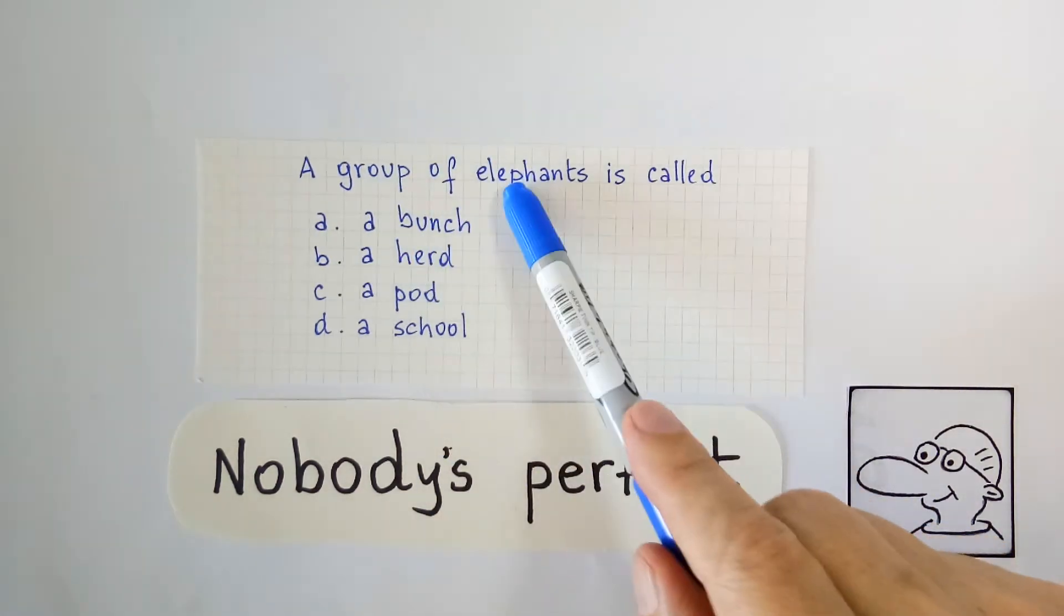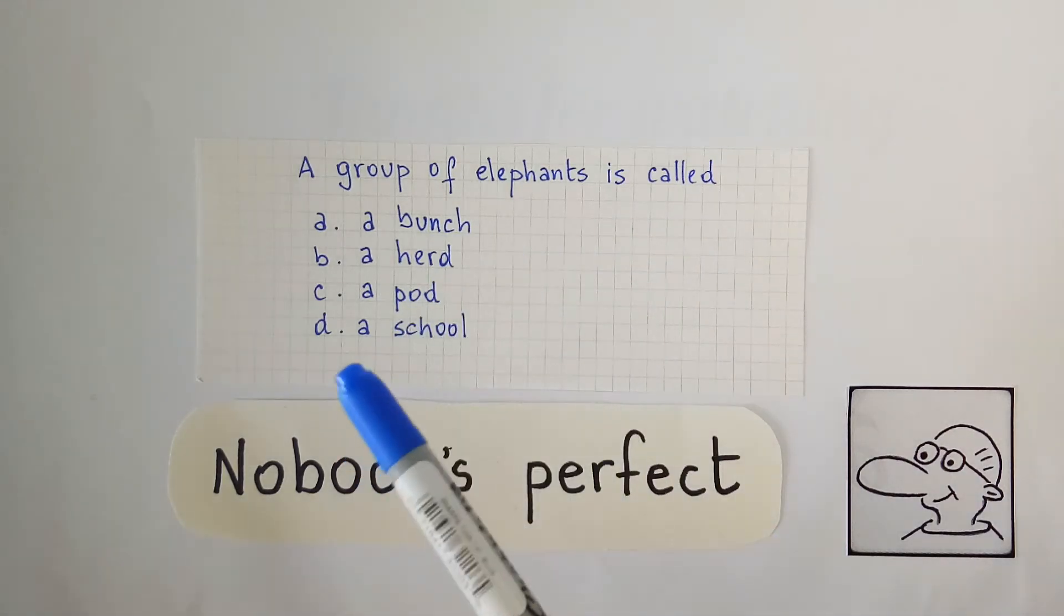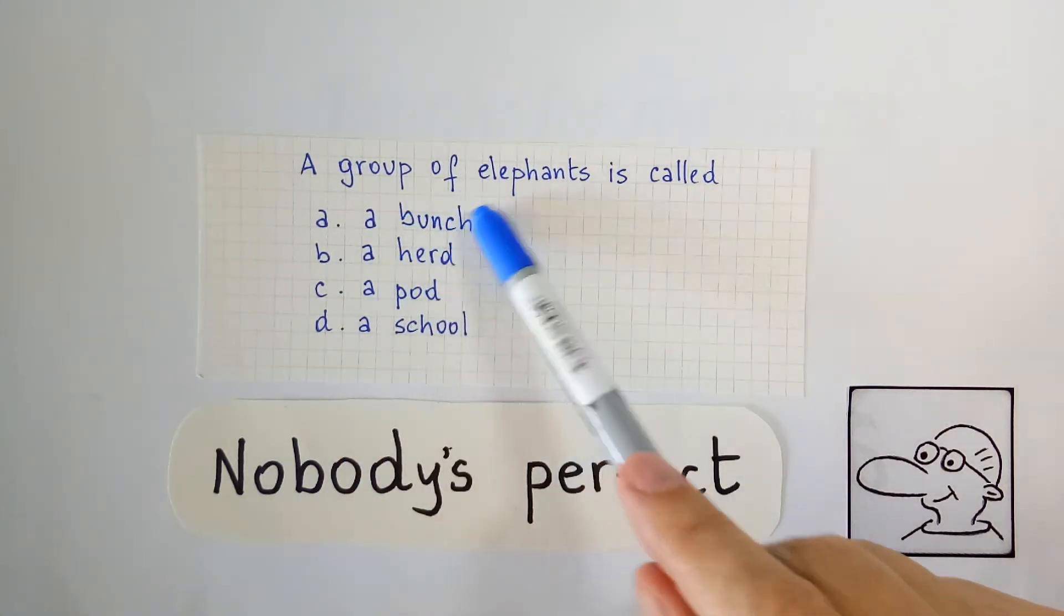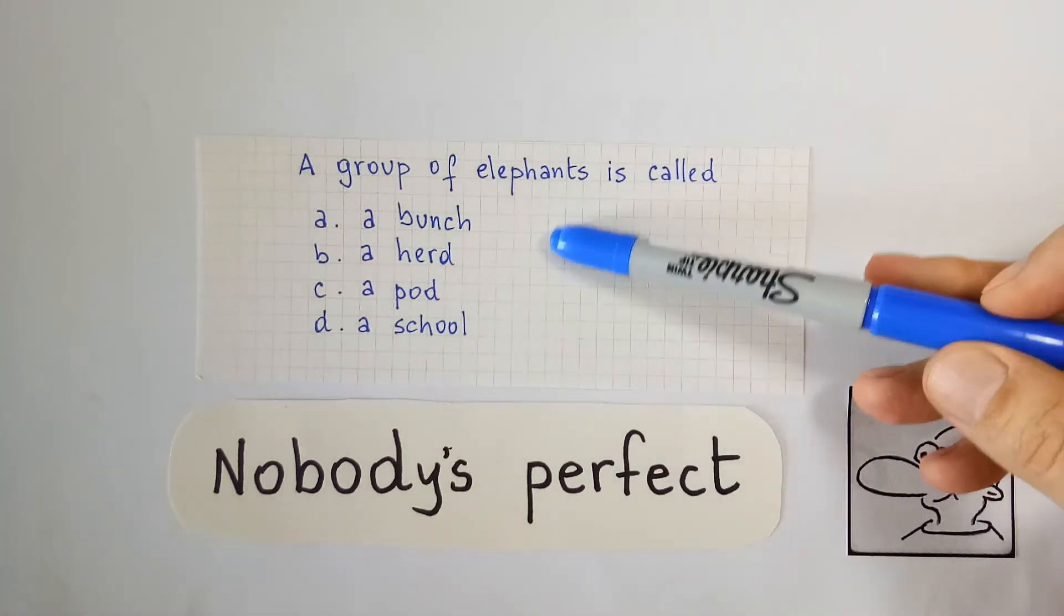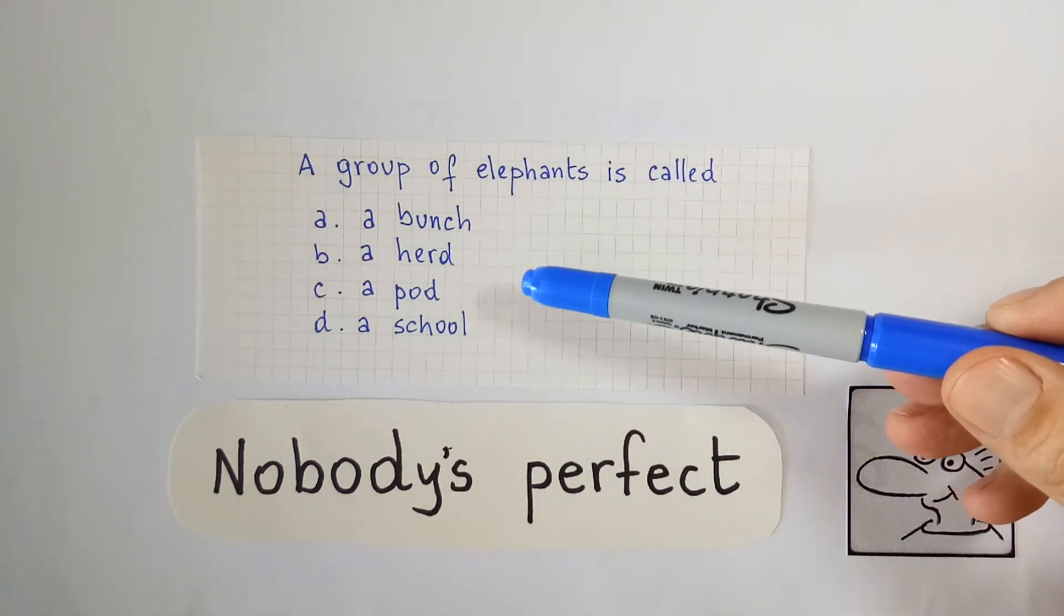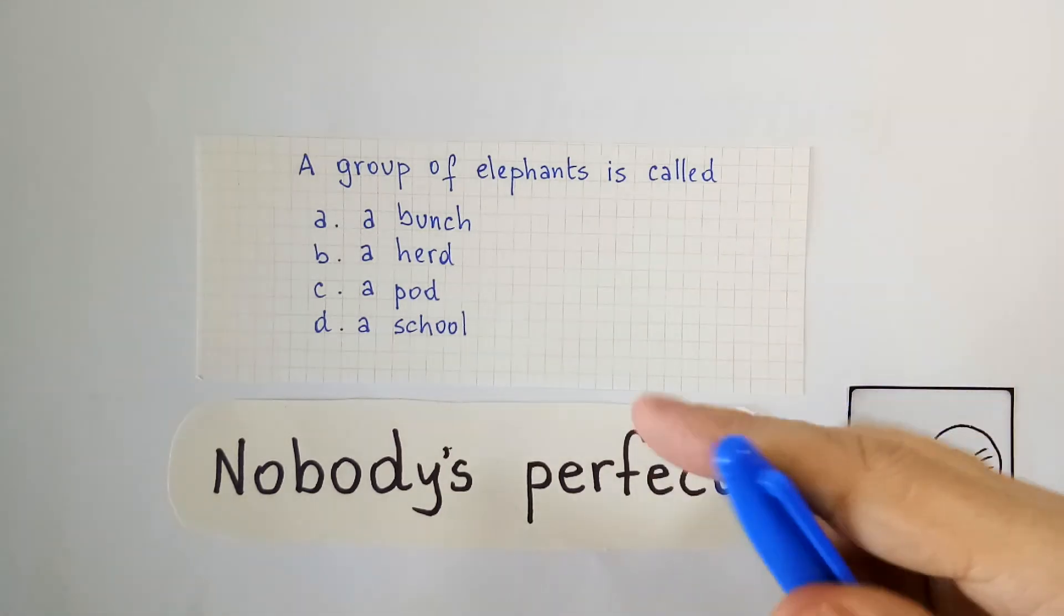As you may know, groups of animals usually have a specific name. Now do you know what we call a group of elephants? There are four choices: a bunch, a herd, a pod, or a school.